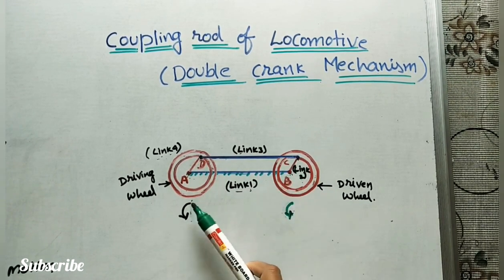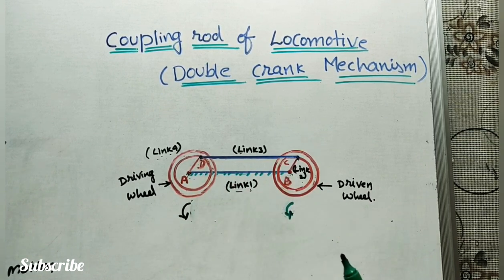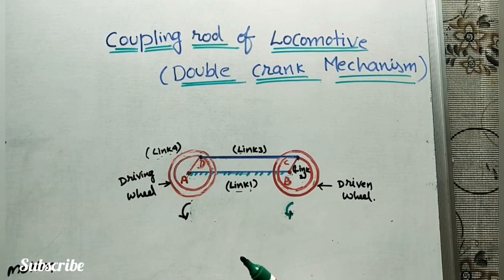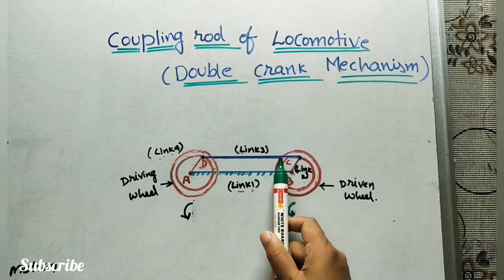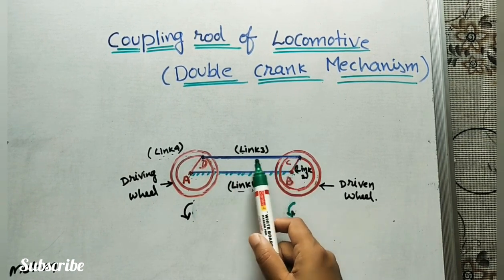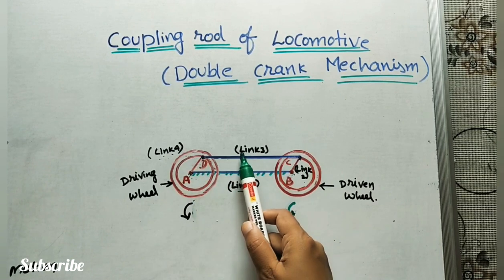These two cranks are connected with the fixed link, that is link AB. This AB is maintaining a constant center to center distance between them. And the next link is this joining rod, the coupling rod that is CD. It is link 3.